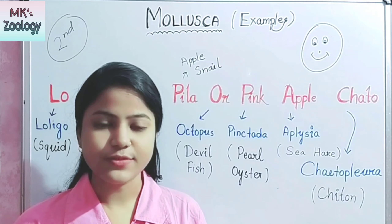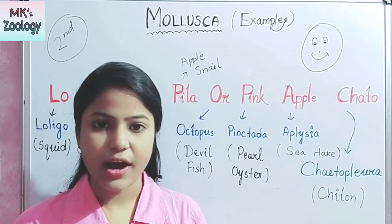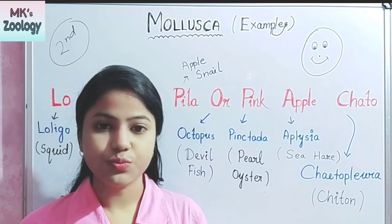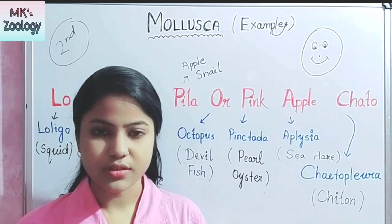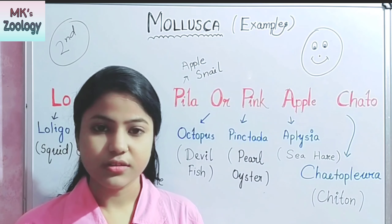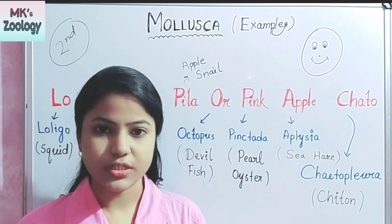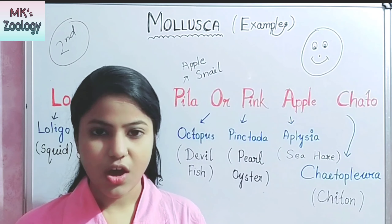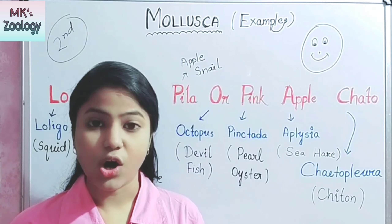The animals which belong to phylum Mollusca have a hard calcareous body cover, which may be of three types. It may be external, like in snail and Pina; it may be internal, like in Sepia; or it may be absent, like in Octopus.